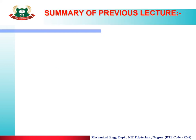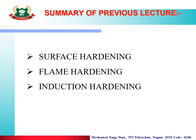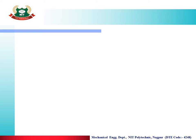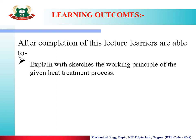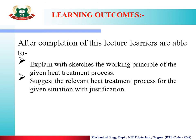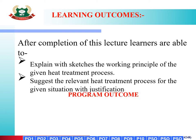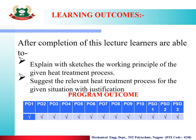Let us summarize the previous lecture. In the previous lecture, we have learned about surface hardening processes, i.e. flame hardening and induction hardening. After completion of this lecture, you will be able to explain with neat sketches the working principle of a given heat treatment process, and suggest the relevant heat treatment process for a given situation with justification. These are the program outcomes to be achieved after successful completion of this lecture.